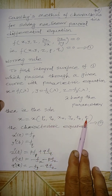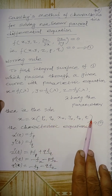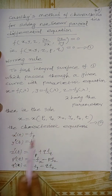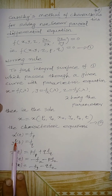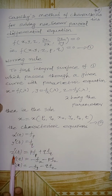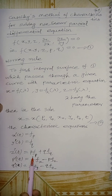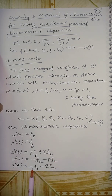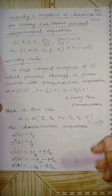The initial conditions are: initial values p0, q0, x0, y0, t0, where t0 is always 0. All problems follow this working rule. The characteristic equations are: dx/dt = ∂f/∂p, dy/dt = ∂f/∂q, dz/dt = p·(∂f/∂p) + q·(∂f/∂q), dp/dt = −∂f/∂x − p·(∂f/∂z), dq/dt = −∂f/∂y − q·(∂f/∂z).